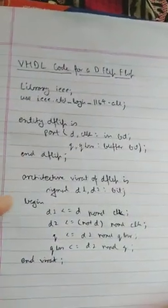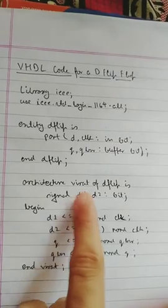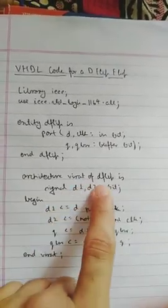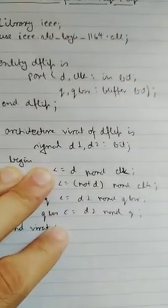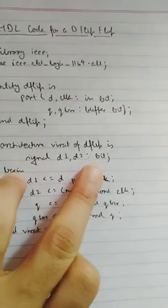Now with that entity we create an architecture. We name that architecture VIRAT. Architecture VIRAT of DFLIP is. Then we declare the signals. The signals being D1 and D2. They are also of type BIT.